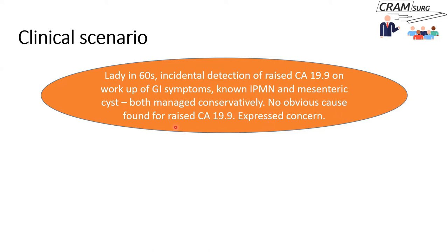There wasn't an obvious cause for the raised CA-19-9, and the patient was worried she had this tumor marker that was high with no explanation. One of the clinicians looking after her did a PET scan to address the raised CA-19-9 and look for underlying problems. The PET scan picked up a thyroid nodule, and that's how she came to see me.